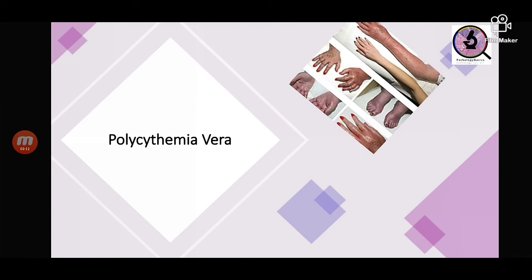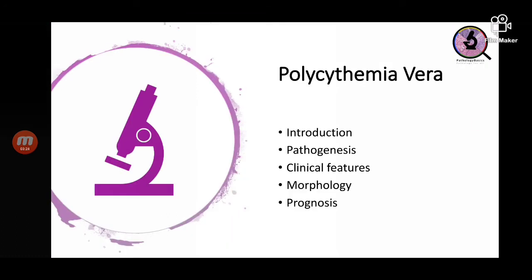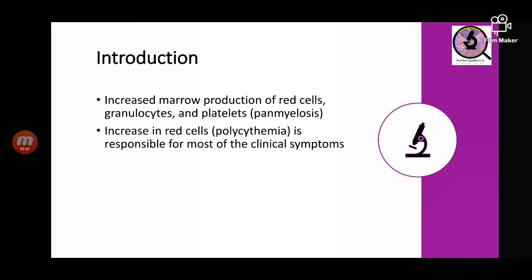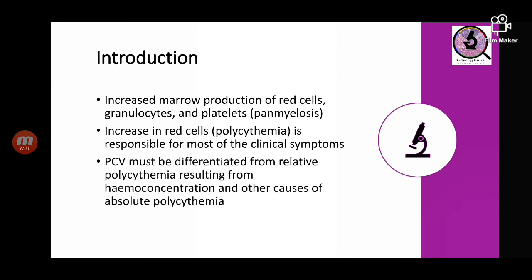The second important myeloproliferative disorder is polycythemia vera. As the name suggests, it is due to increased marrow production of red cells mainly, along with small amounts of increased granulocytes and platelets — therefore called panmyelosis. The increase in red cells is responsible for most of the symptoms. It is important to distinguish polycythemia vera from other causes of polycythemia such as hemoconcentration and dehydration, which are relative causes that must be ruled out before diagnosis.